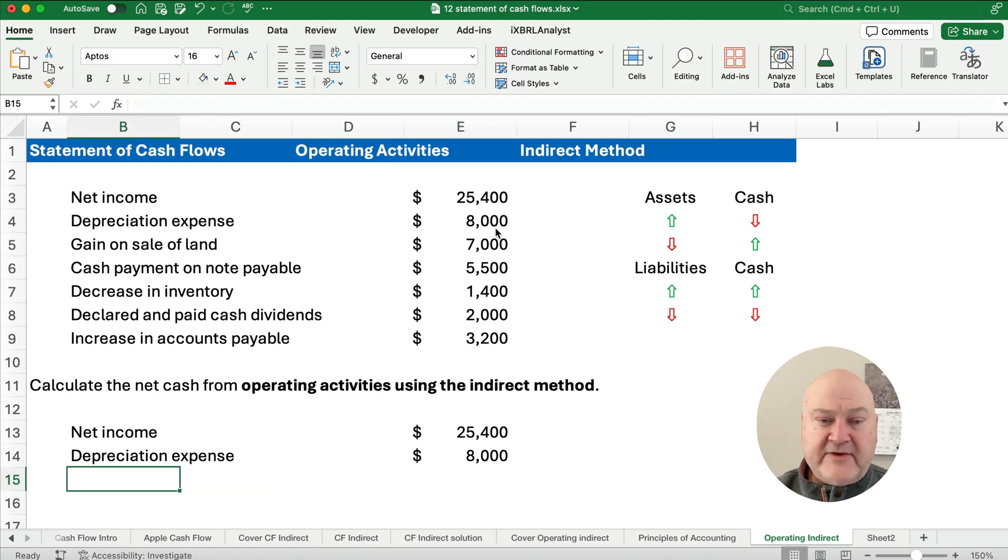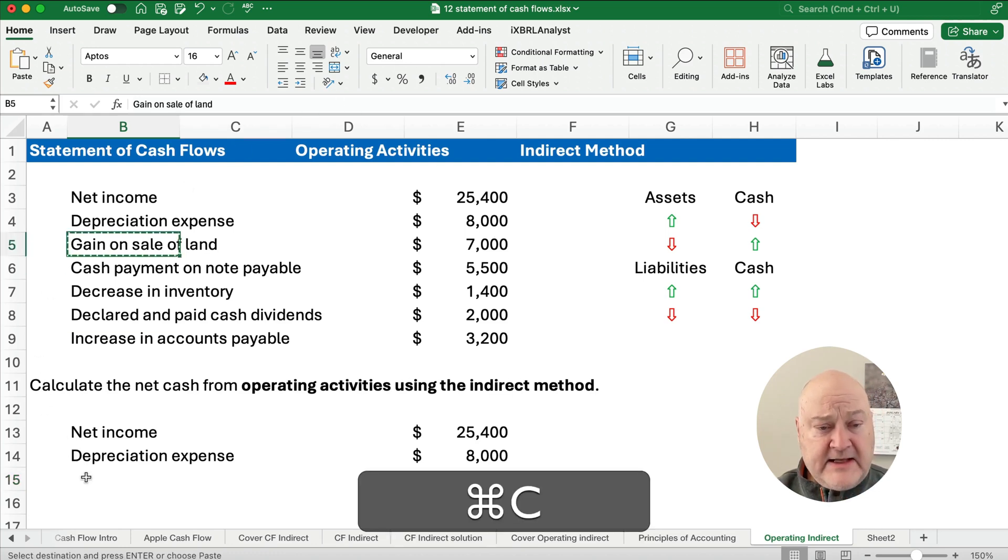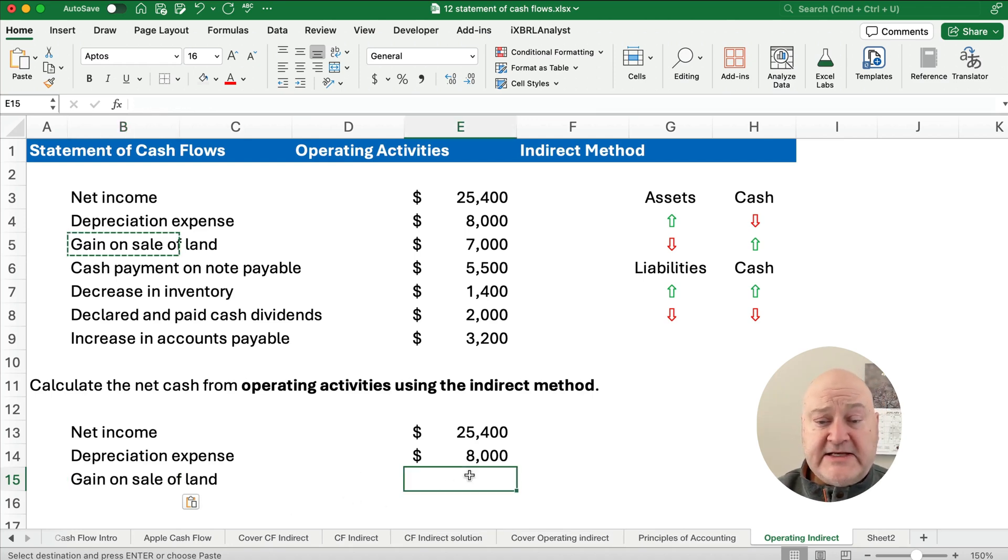All right, the next one is gain on sale of land. Same kind of thing here. The gain on sale of land is a positive on the income statement, so we need to subtract. So we're going to make a negative $7,000. We're going to take out that gain because it's not extra cash. We didn't receive $7,000 extra cash. That's included in the original transaction.